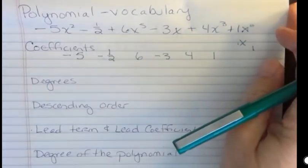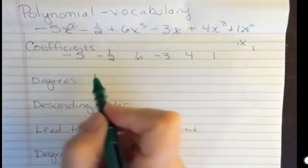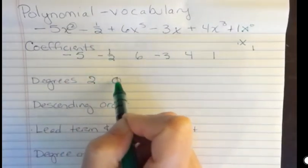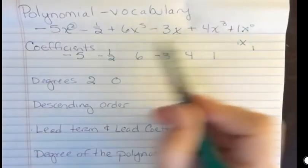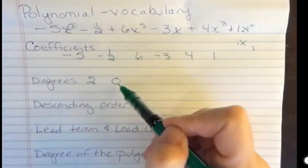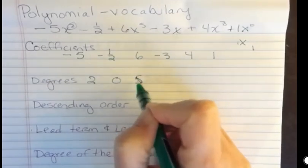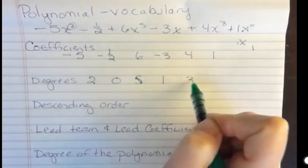The degree is the power of each term. So if I list the powers here, the degree of this power is 2, meaning this term. The degree of this term is 0. There's no x's here, so it's a 0 degree term. The degree of this one is 5, the degree of this one is 1, and the degree of this one is 3.